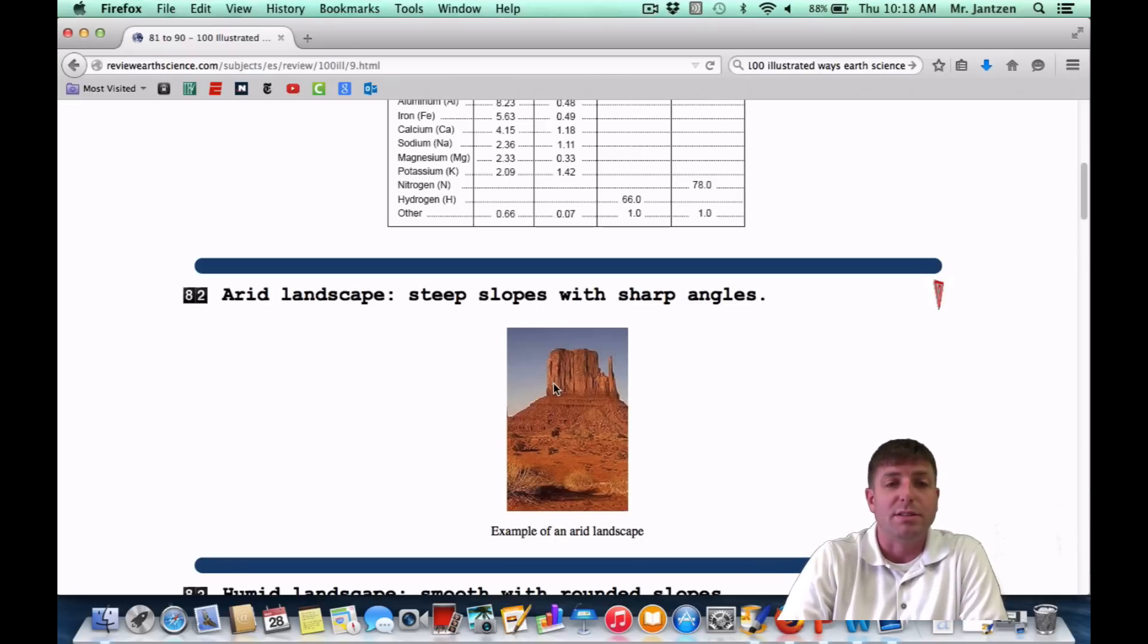Number 82: arid landscape means steep slopes with sharp angles. Once again, arid means dry, and here's an example of one. So, kind of like a desert region. And the landscape is going to be very angular, very sharp. So kind of a little fun fact you want to have memorized walking in.